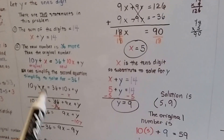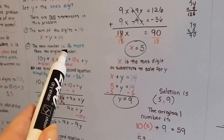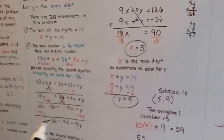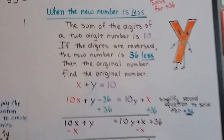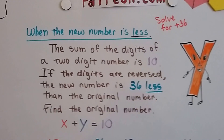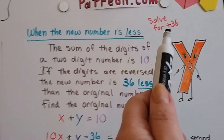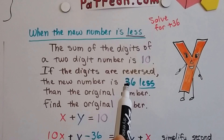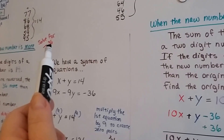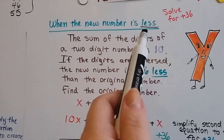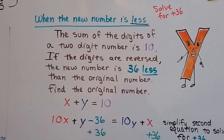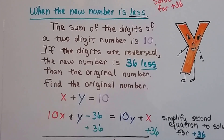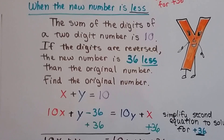The biggest thing to remember is: when you're doing the second equation, if you're going for more, you want to solve it for a negative of whatever that more is. When the new number is less, we're going to solve it for a positive of the less number. So when it's more, solve it for a negative version of that more number. When it's less, solve it for a positive version of that less number. It's kind of opposite — it's kind of hard to remember, you might want to write it down.